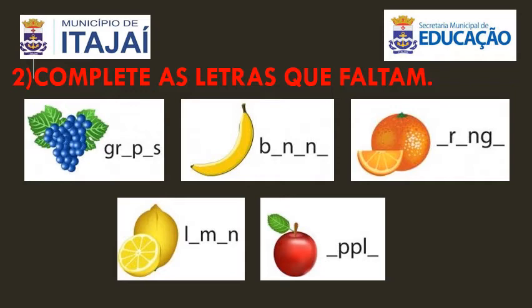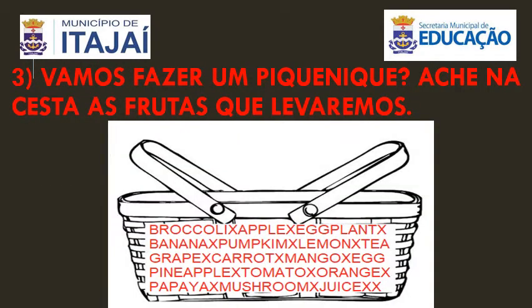Depois que terminar esse exercício, tem mais um. Esse exercício aqui. Pula uma linha, vai escrever: Número 3. Vamos fazer um piquenique? Ache na cesta as frutas que levaremos. Vocês estão vendo ali uma cesta de piquenique e ali no meio dela, em letrinhas vermelhas, tem um monte de palavras. No meio dessas palavras tem frutas — 8 frutas. Você vai ter que achar ali o nome de 8 frutas e vai copiar no seu caderno. Não precisa desenhar a cesta. Você só vai dar uma pausa no vídeo e já vai copiando os nomes das frutas. Uma embaixo da outra, bem caprichado. Somente isso.